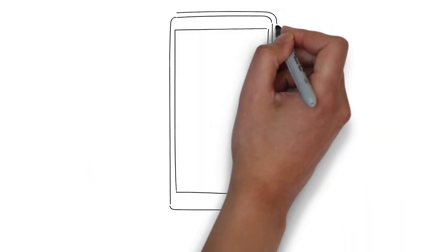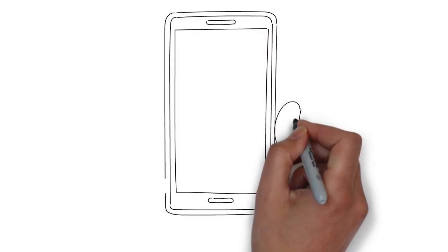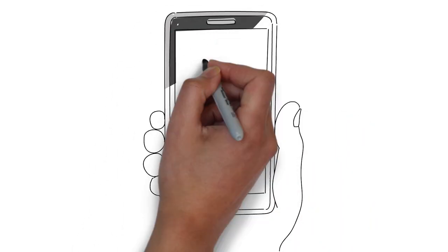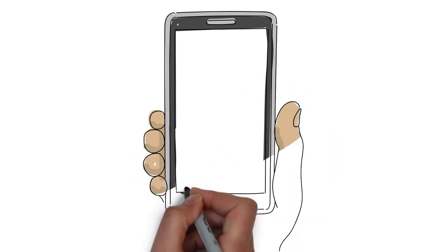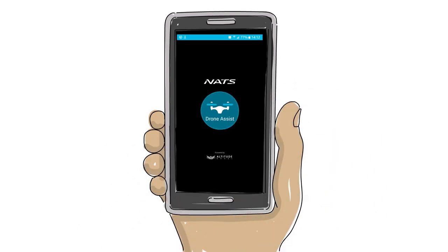To help you, NATS, the National Air Traffic Management Company, responsible for safely managing UK airspace, has released an app called DroneAssist that you can easily download for free.